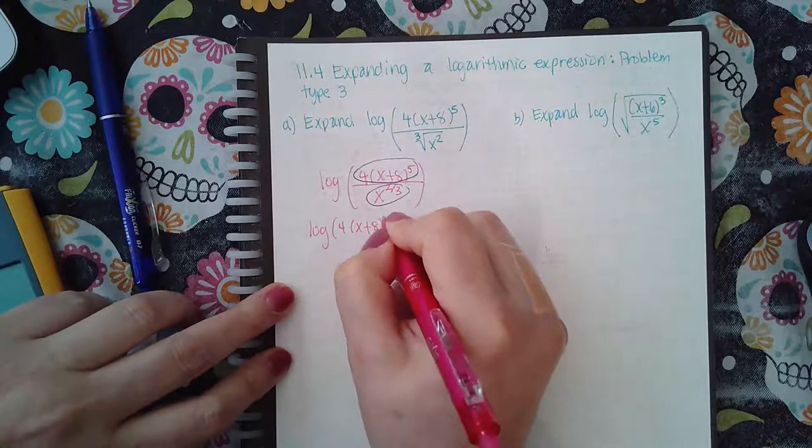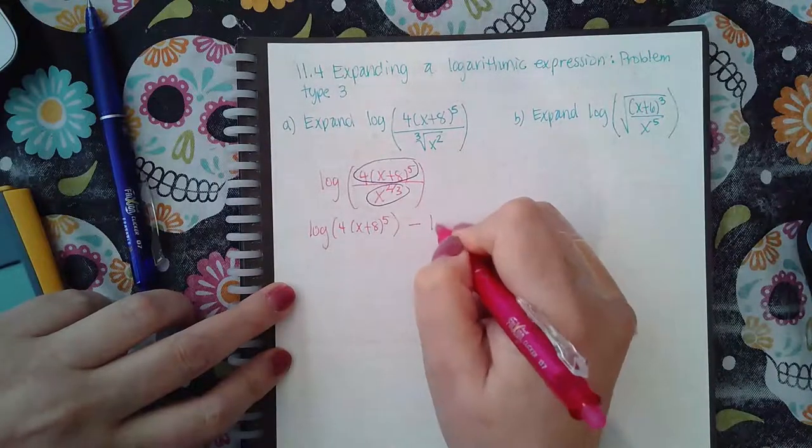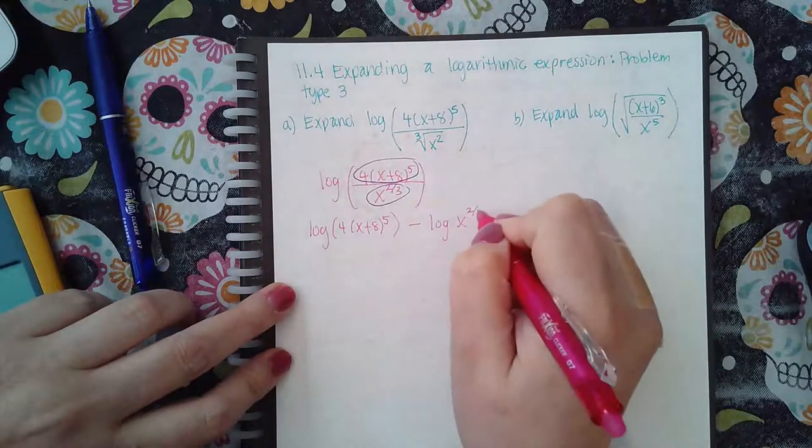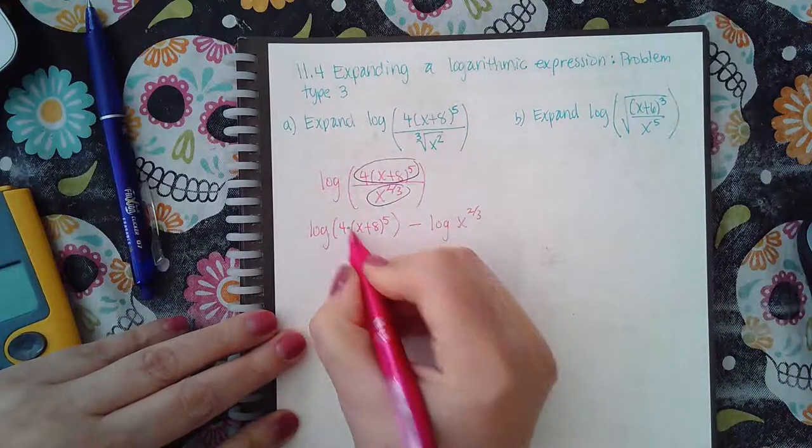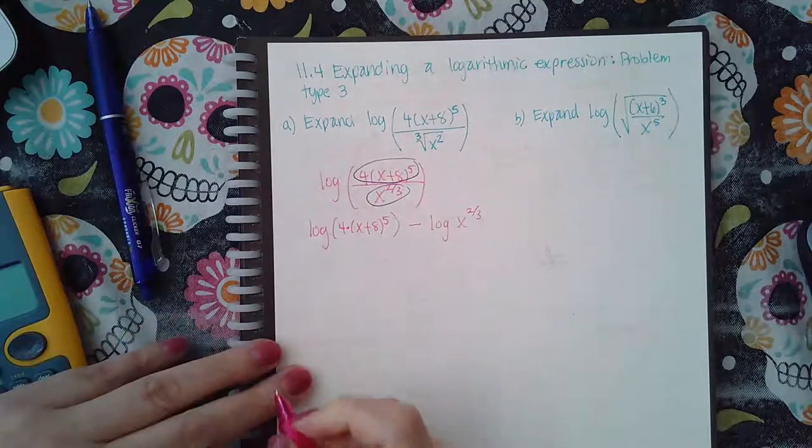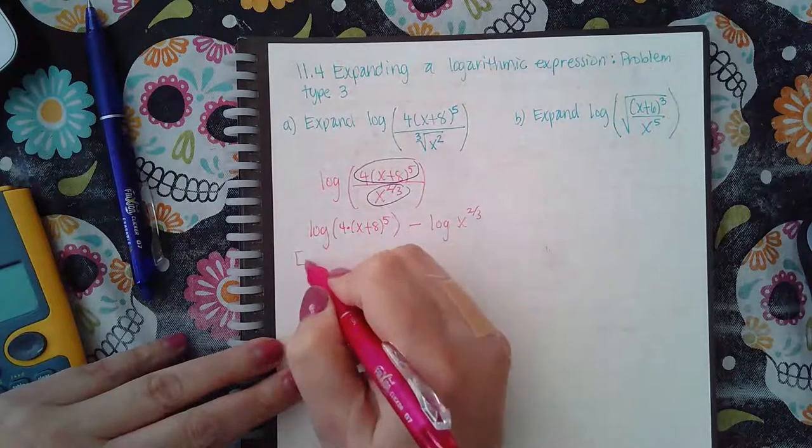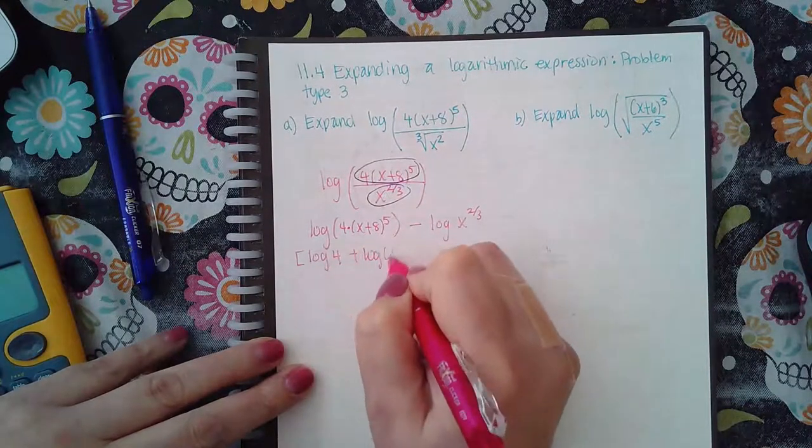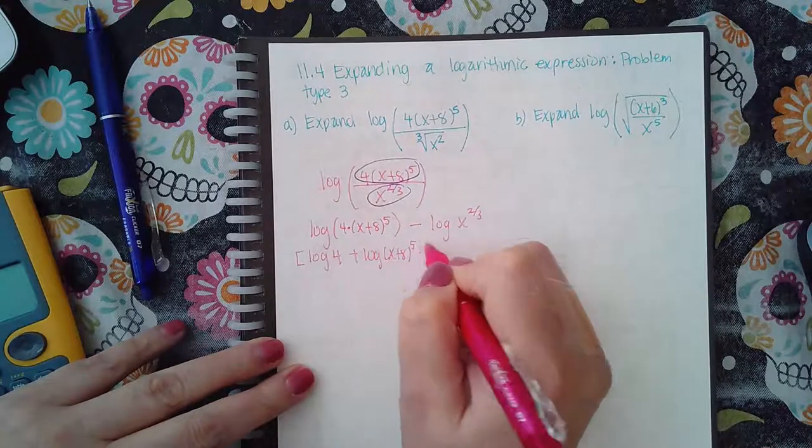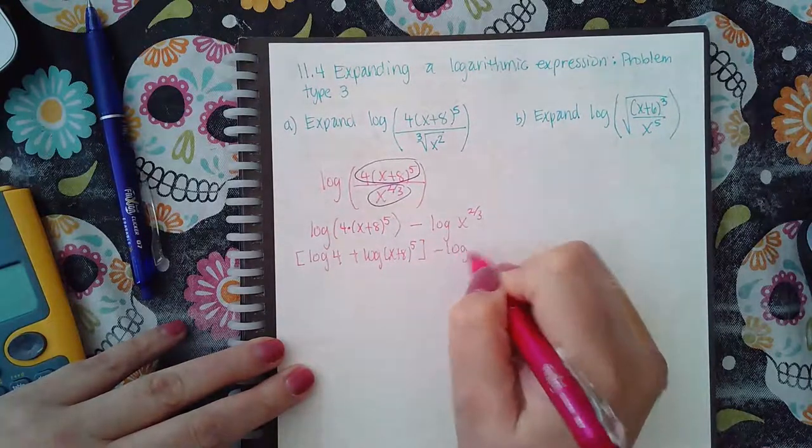Then I do have a product here because I have 4 times this x plus 8 to the fifth, so I'm going to use my product rule. So log of 4 plus log of x plus 8 to the fifth and then minus log of x to the two-thirds.